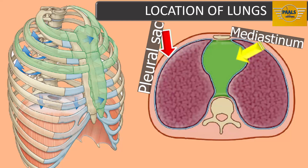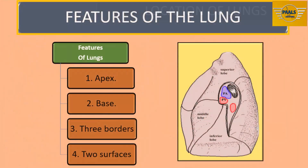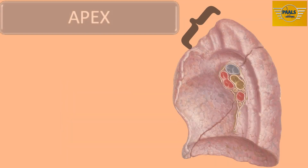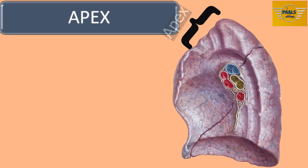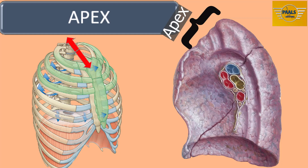The lung has the following features: the apex, the base, borders, and surfaces. Starting with the apex — this rounded superior end of the lung, as a result of the slanting nature of the superior thoracic aperture, lies within the thoracic cavity from the posterior view but projects above the superior thoracic aperture from the anterior view. It projects above the rib and clavicle into the root of the neck anteriorly.